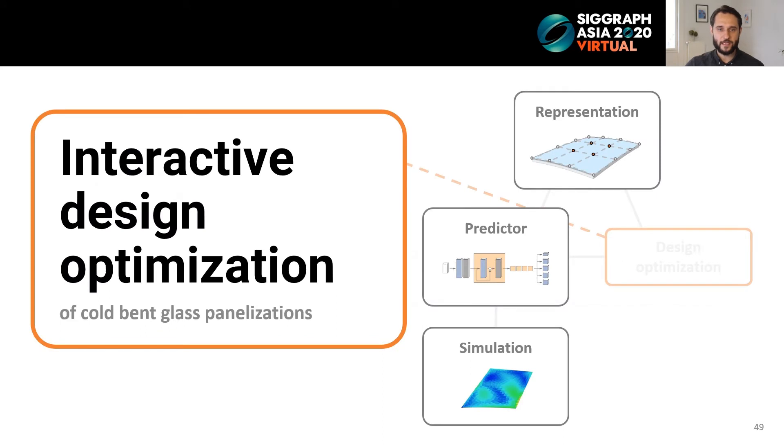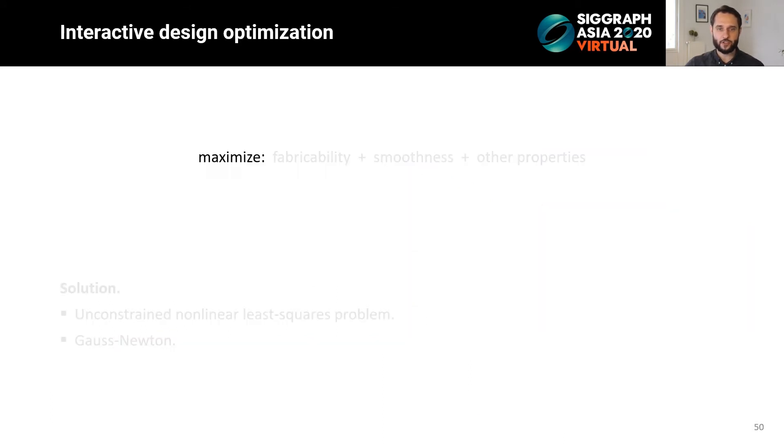To actually achieve interactive design optimization of such panelizations, we aim to maximize a collection of desired properties in the final design, each formulated as a weighted energy functional. The main drivers for this optimization are the fabricability of the design using cold bending, that is, increase the number of cold bend panels in the final design, and facade smoothness, which we will discuss in more detail. Other properties include mesh fairness and reference proximity, which are standard in geometry processing, as well as some constraints that are derived from the expected input of the neural network.